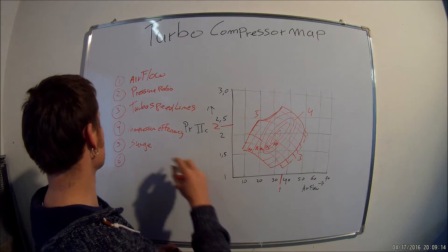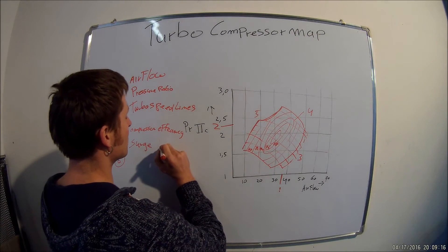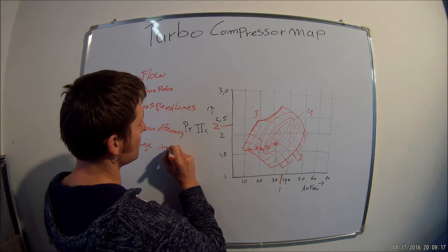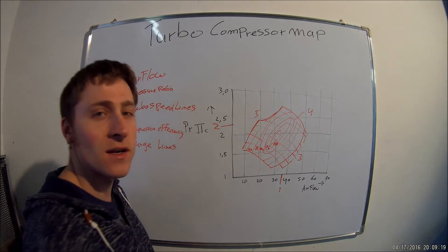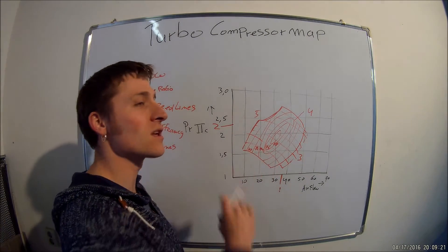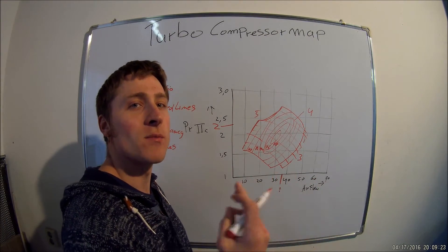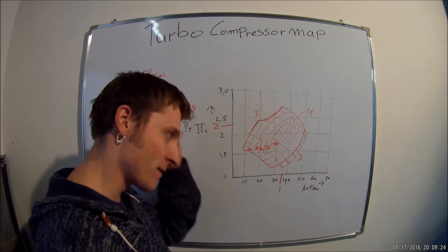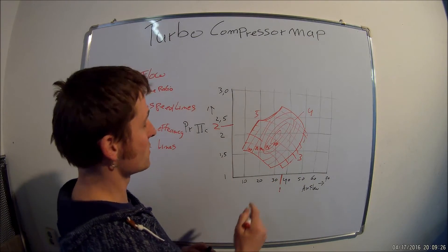It can also damage your turbo if you run it too much past the surge line, because your turbine wheel is going back and forth through the bearing, so it can get some damage.